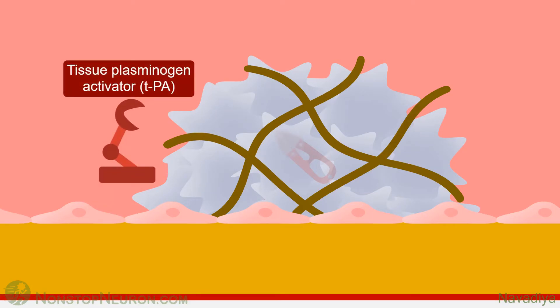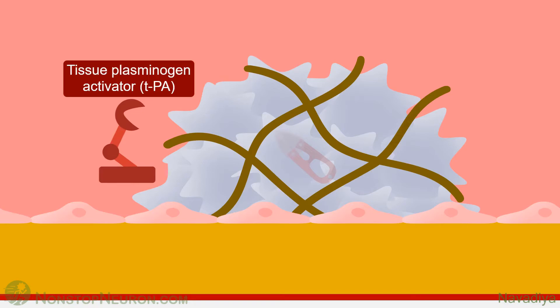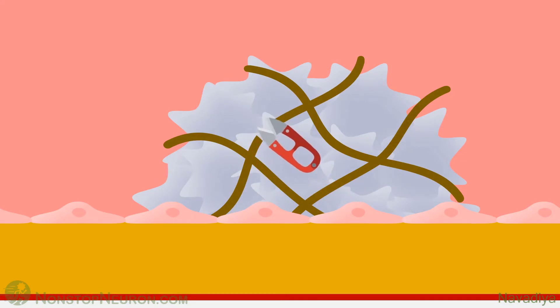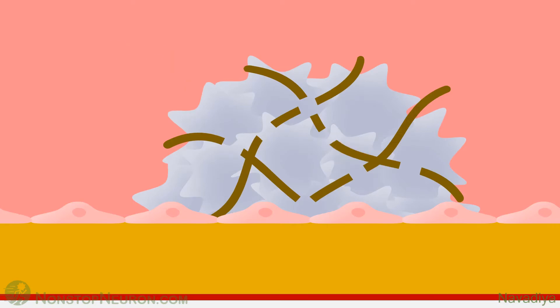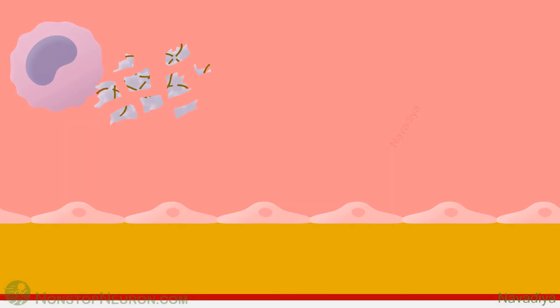The process starts with tissue plasminogen activator, which is released from the endothelium. There is also another type called urokinase plasminogen activator, or simply urokinase. However, that is synthesized mainly during inflammation and is involved in extravascular fibrinolysis. Otherwise, it is tissue plasminogen activator doing the job most of the time. In the clot, it binds with fibrin and then activates plasminogen into plasmin. Plasmin cuts down fibrin strands. The breakdown products are called fibrin degradation products. Without the fibrin meshwork, the clot gradually dissolves. The fragments of clot in blood are cleared by phagocytes, and finally everything returns to normal.